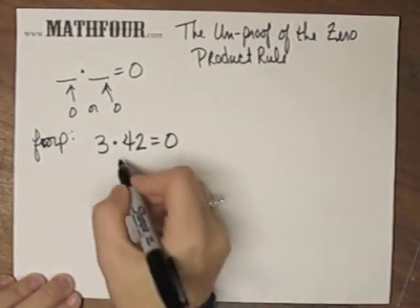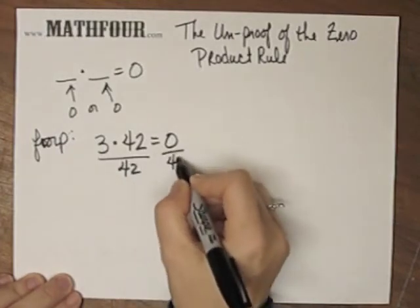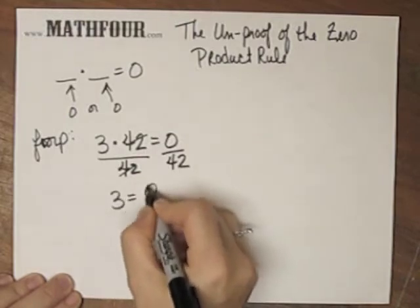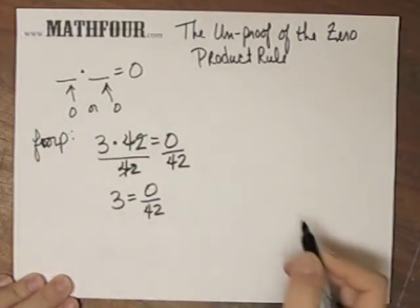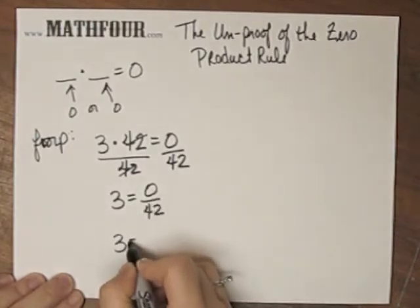So what does this mean? It means if I divide, well, it means a whole bunch of things. One of the things that it means, if I divide both sides by 42, then I have 3 is zero over 42. From a previous video, we know that zero over 42 is just zero.